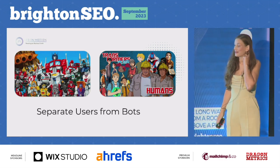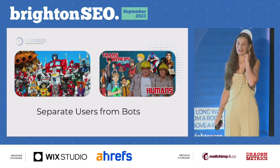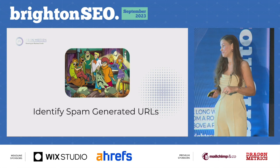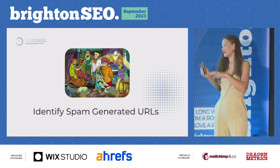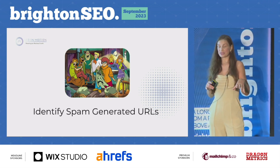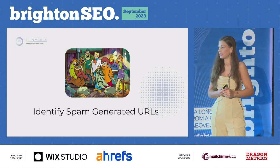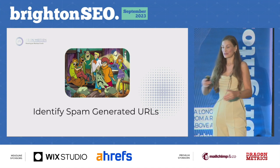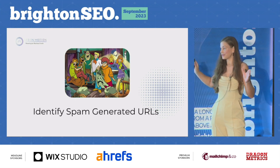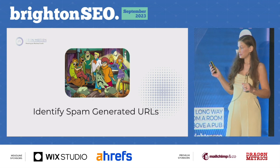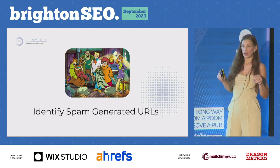You can also separate users from bots. Google Analytics doesn't give you the full picture — there's loads of bot traffic in there, which you'll actually see in the referrals if you dig into that data. Log file analysis gives you a true picture of how many users you're getting to your site and where they're coming from. Finally, you can identify spam-generated URLs. You might identify this through a site search on Google or through Google Search Console in a bunch of crawled-but-not-indexed pages, but it doesn't always come up. If your site's been hacked, you might not know about it for a long time — log file analysis will tell you whether you've got spam-generated URLs, which is particularly common on WordPress sites.